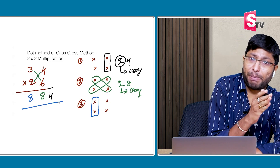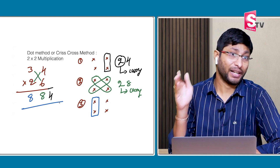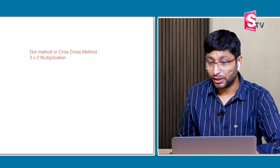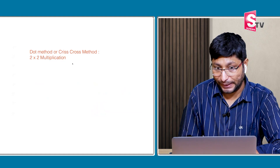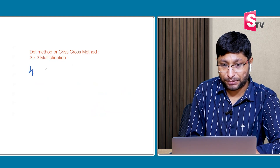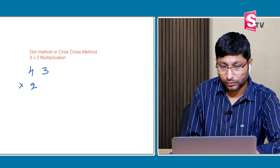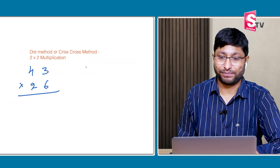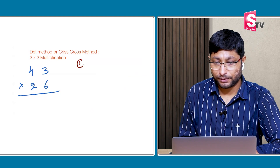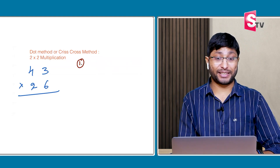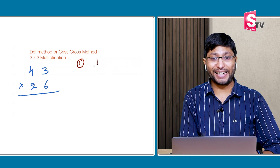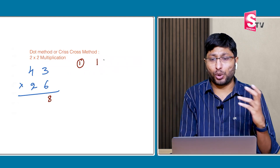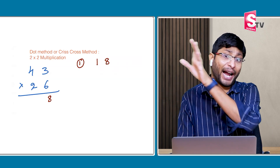If you didn't understand, please rewind the video and watch step by step again. Now I will explain without writing the steps on the board — steps in the mind. 43 × 26. Step 1: units place into units place. 3 × 6 = 18. Write down 8, and 1 will be carry.